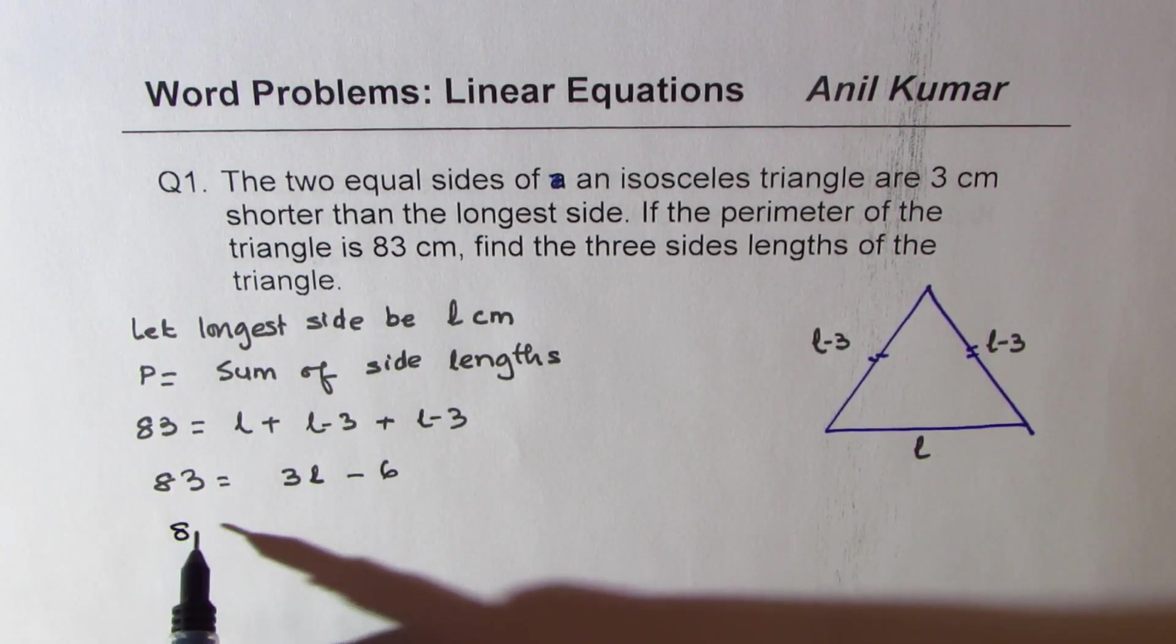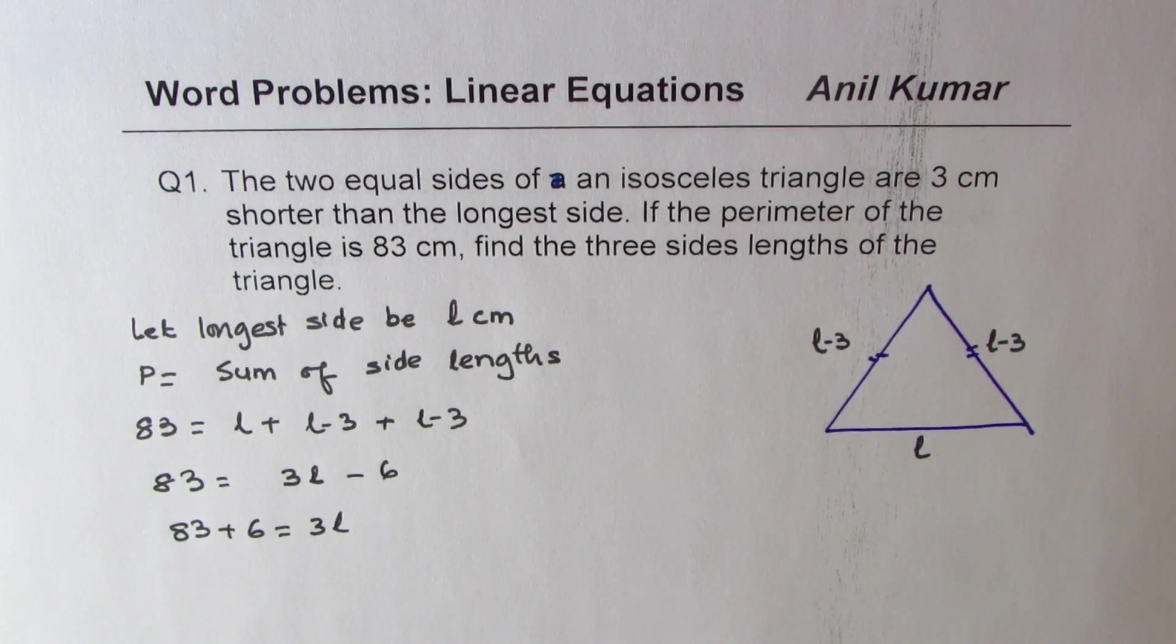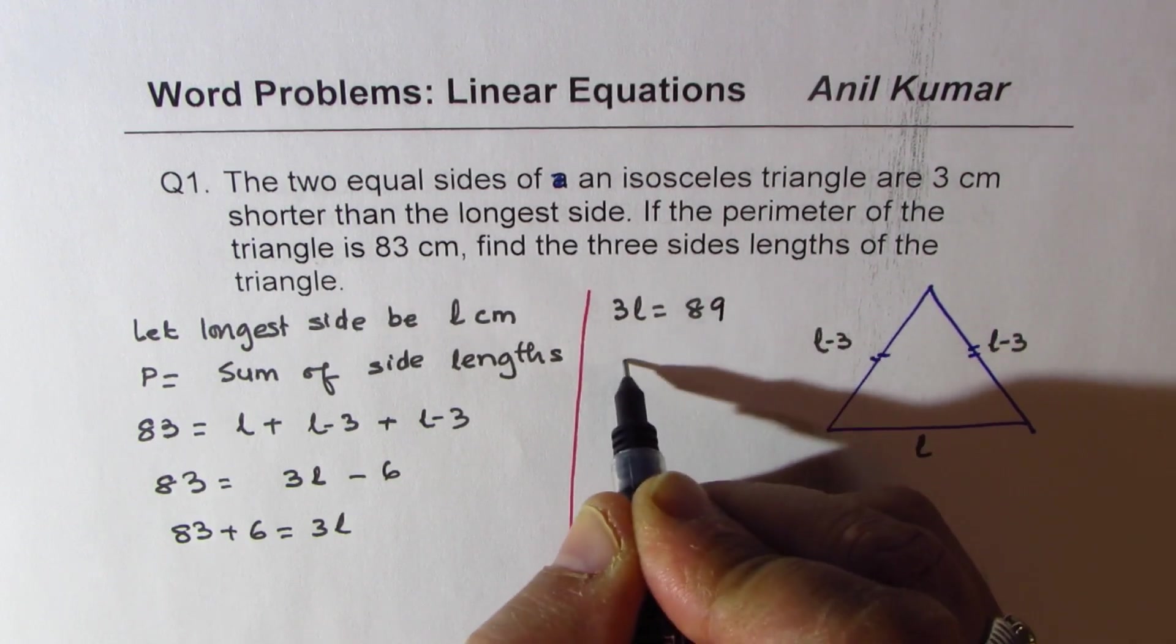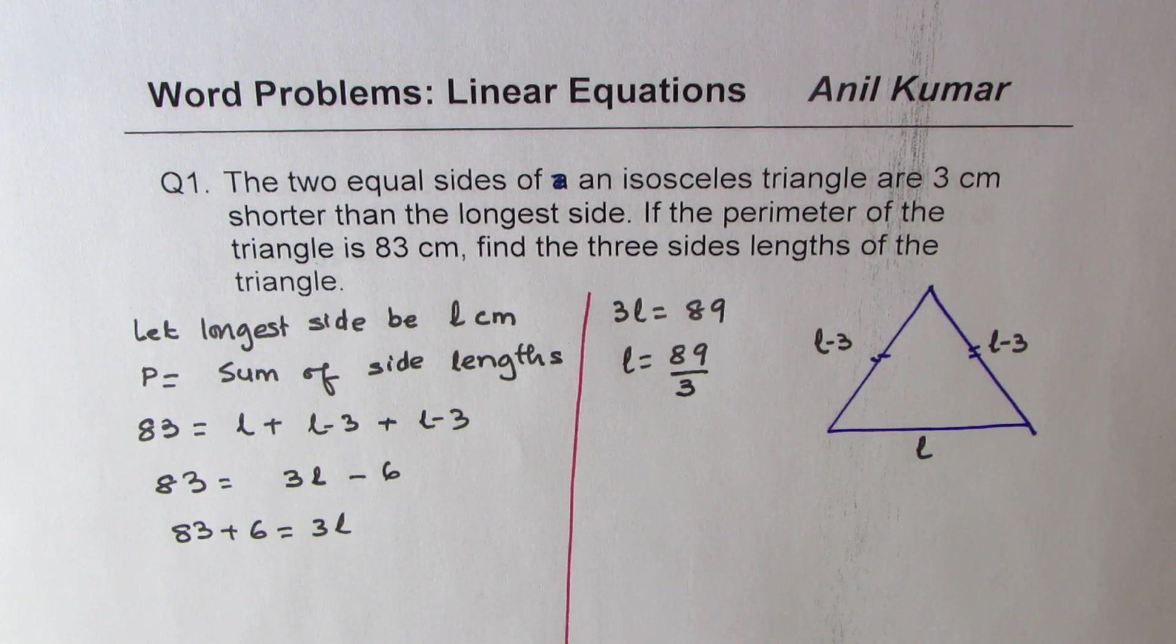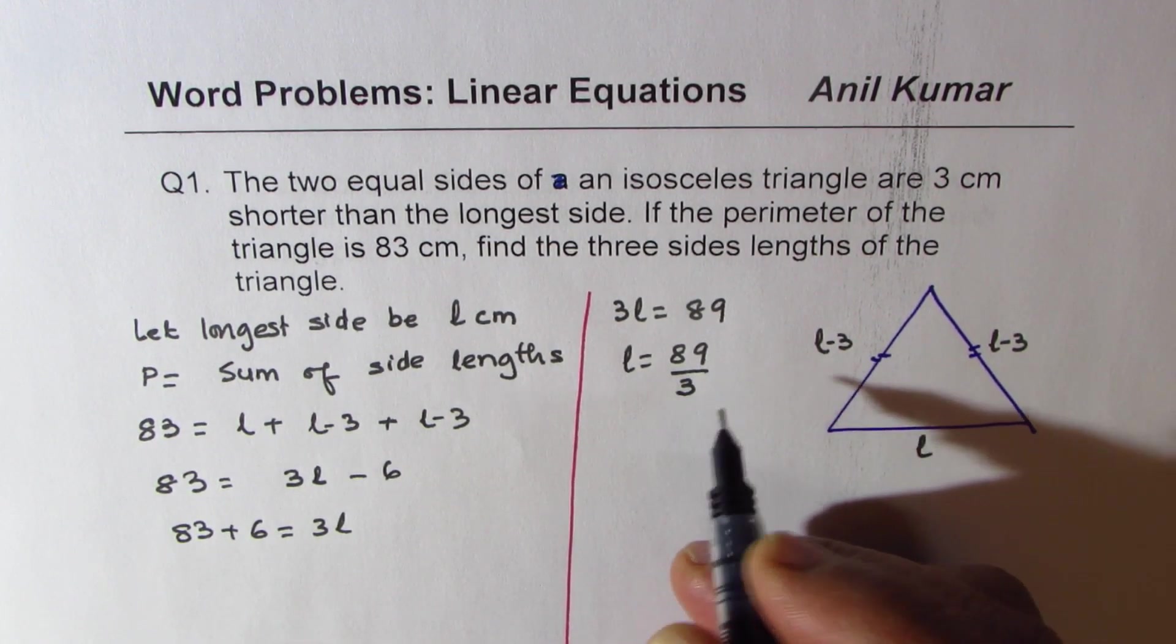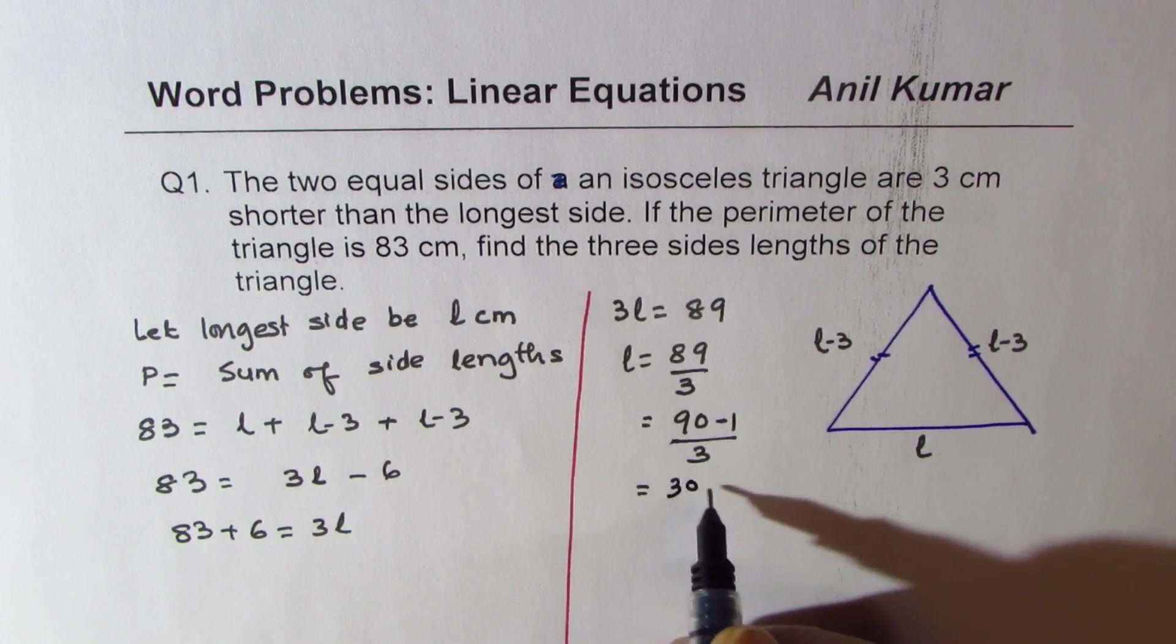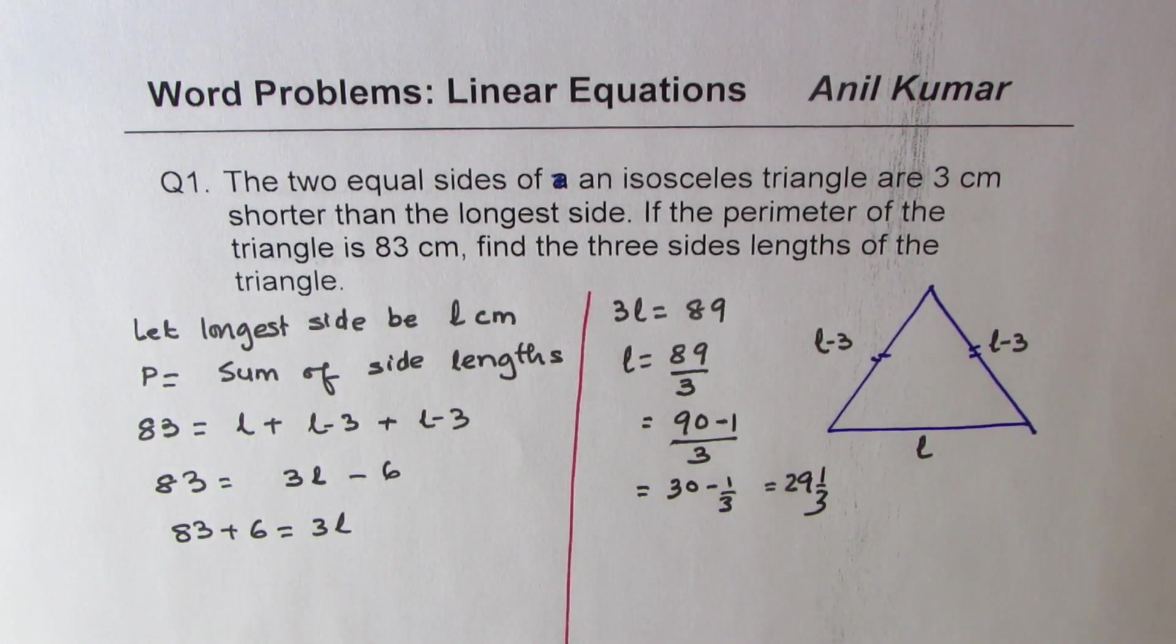Bringing 6 to this side, we get 83 plus 6 equals 3 times L. That is 89. So 3L is 89, length is 89 over 3. Now 89 is 1 less than 90. You could think like this: 90 minus 1 is 89 divided by 3, which will give you 30 minus 1 over 3 or 29 and 1 over 3.